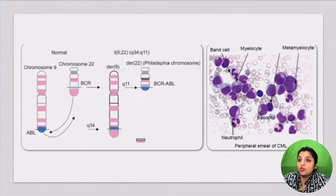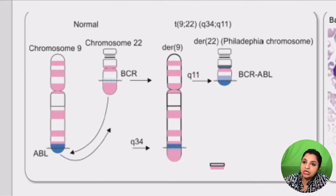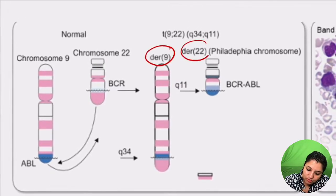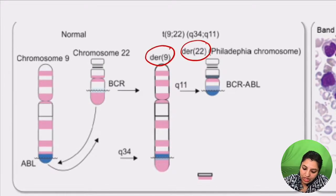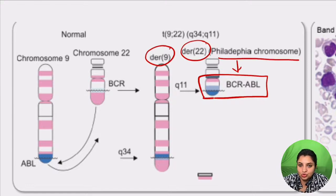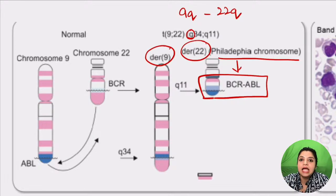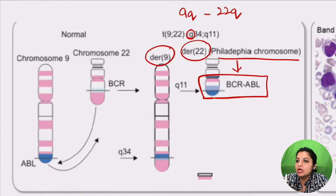For your exam diagram, draw chromosome 9 and chromosome 22, and show the reciprocal translocation with formation of BCR-ABL on chromosome 22. Label this as the Philadelphia chromosome. Remember the translocation is always in the long arm — so it is 9q and 22q. The translocation between the long arms of chromosomes 9 and 22 results in the Philadelphia chromosome.